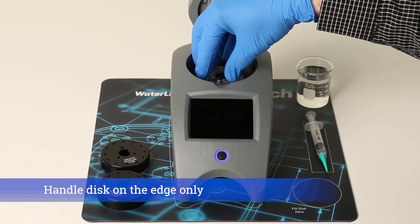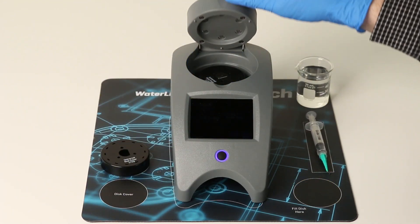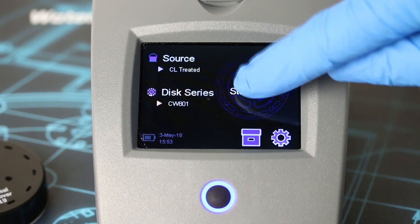Make sure the disk is dry and insert the disk into the meter and cover with the universal disk cover. Close the lid. Tap to start the test.